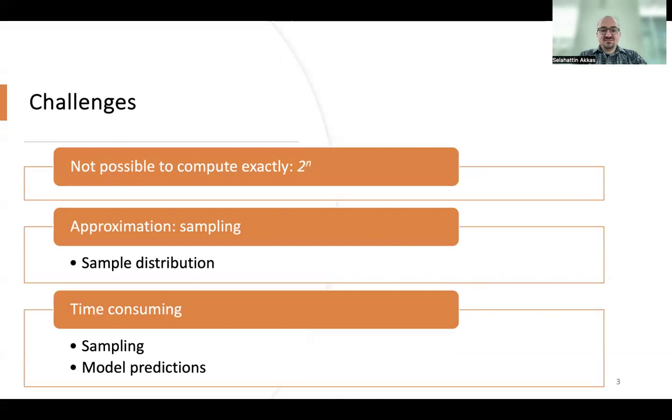While Shapley values can be used as a GNN explanation, it is impossible to compute them exactly when the number of players is large. Instead, approximation methods are used. These methods use a small subset of possible coalitions.